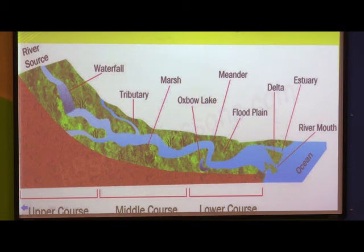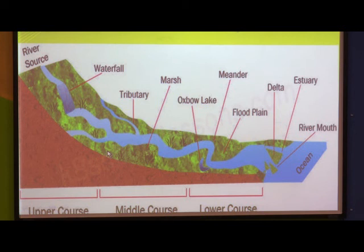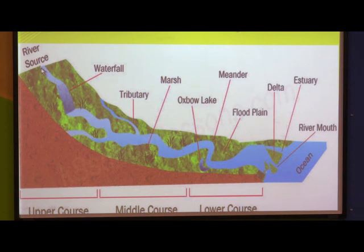As the river reaches the middle course, tributaries from surrounding areas join the main river. These tributaries form oxbow lakes in the middle portion. In the lower course, flood plains, deltas, estuaries, and river mouths are formed. Finally, the river mixes into the ocean or sea.